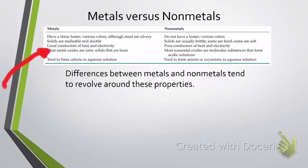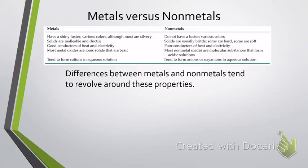Metals are good conductors of heat and electricity, which is why they are used for electrical wiring. Whereas nonmetals tend to be very poor conductors of both heat and electricity, so they are better used as insulators.